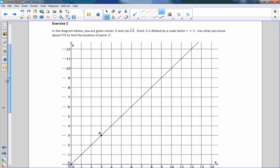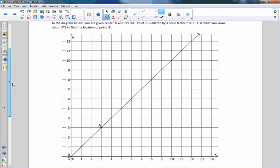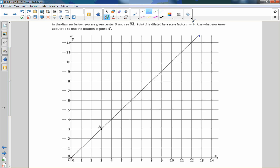Exercise two. Now it says in this diagram below, you are given a center O at the origin and a ray OA. So here's my center O at the origin. Here's a point A. Here is a ray going through OA. Point A is dilated by a scale factor of R equals four. What do you know about fundamental theorem of similarity to find the location of point A prime? So we know that the scale factor is four, so whatever the length of OA is, A prime must be four times as long.